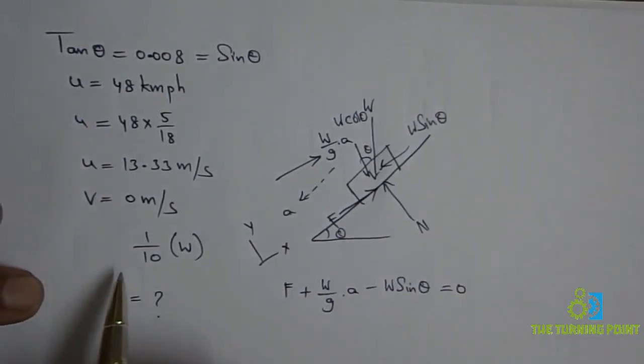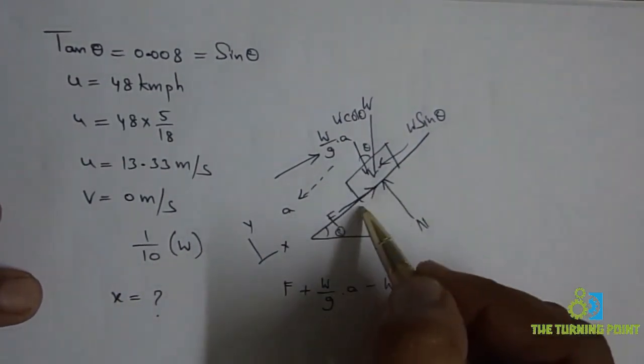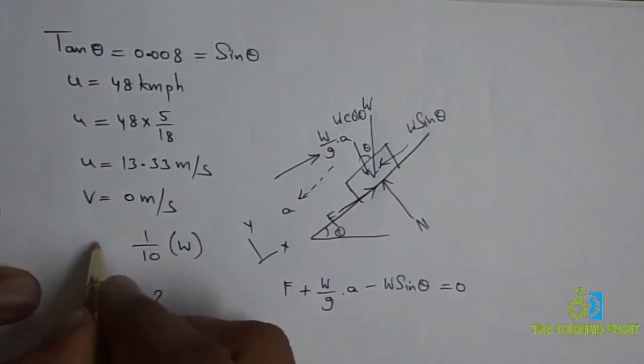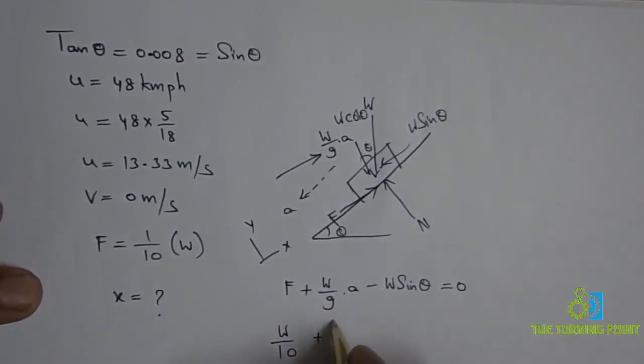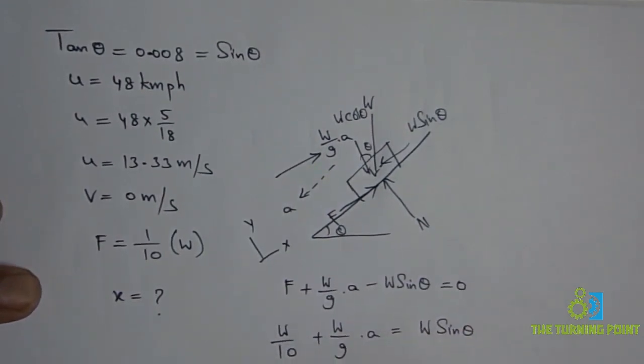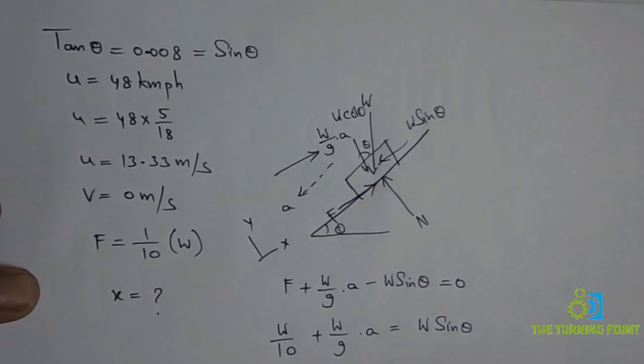It produces a total resistance equal to one tenth of weight of train. This resistance, when the train is moving in this direction, the resistance is the frictional force. It will be equal to W/10. So W/10 + W/G × A = W sin theta. Take W as common: 1/10 + A/G = sin theta.